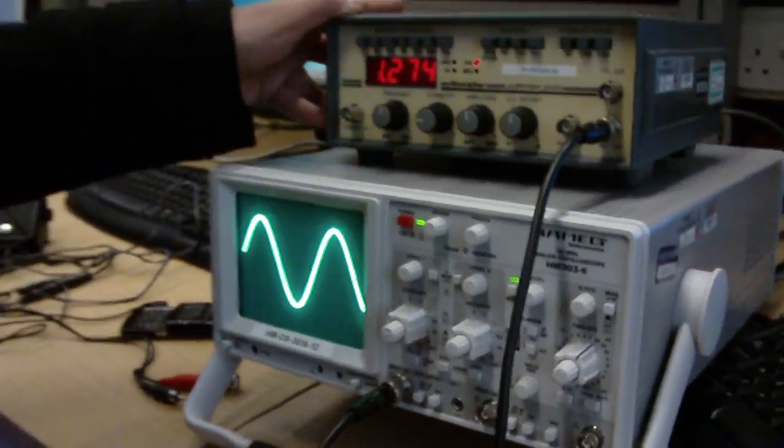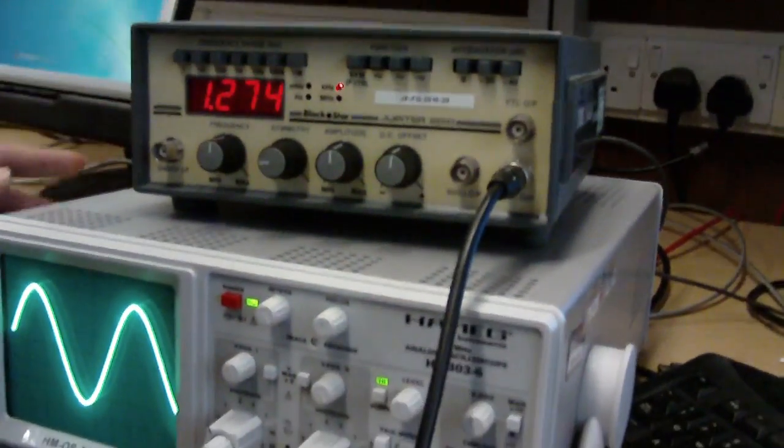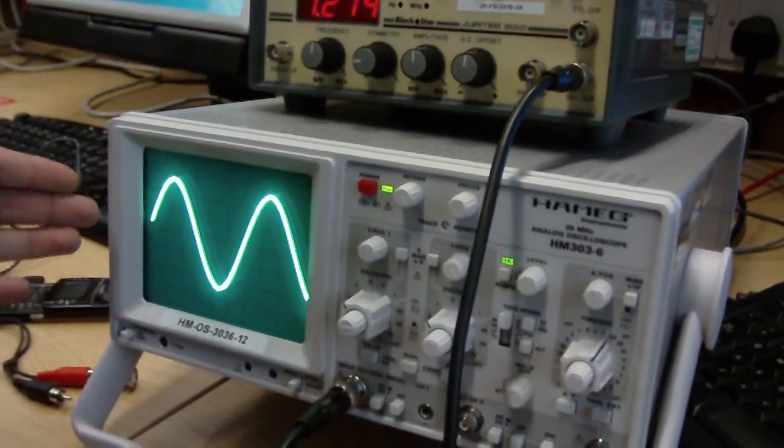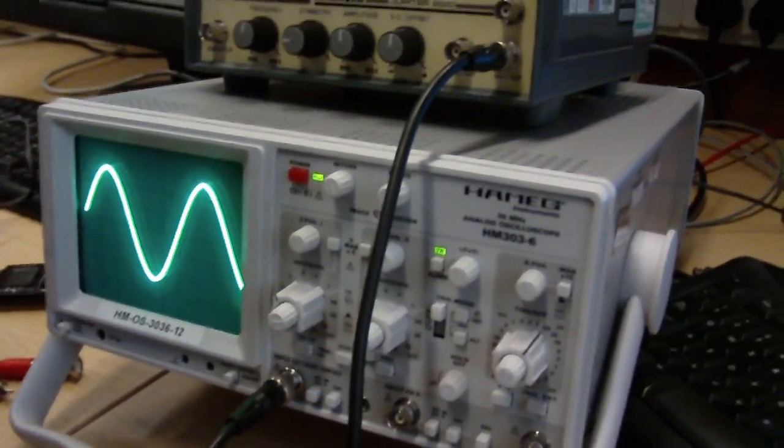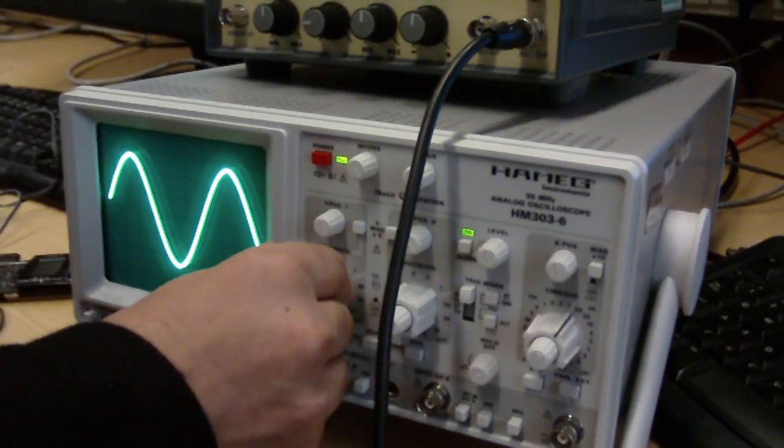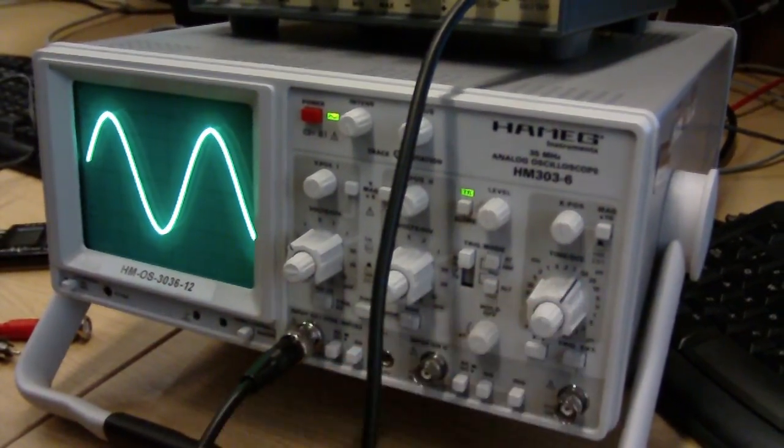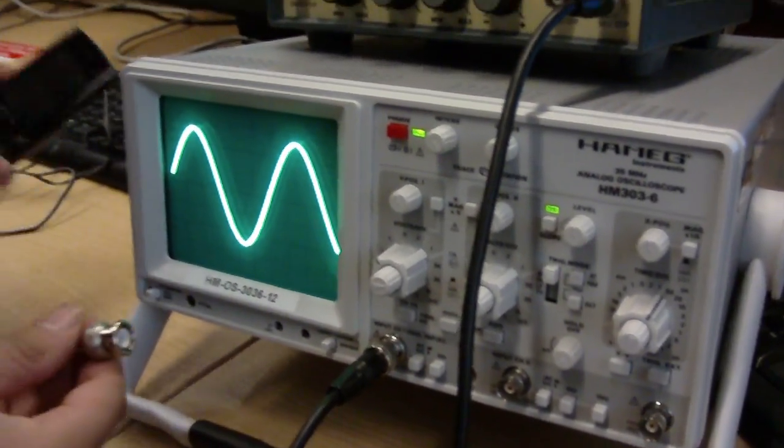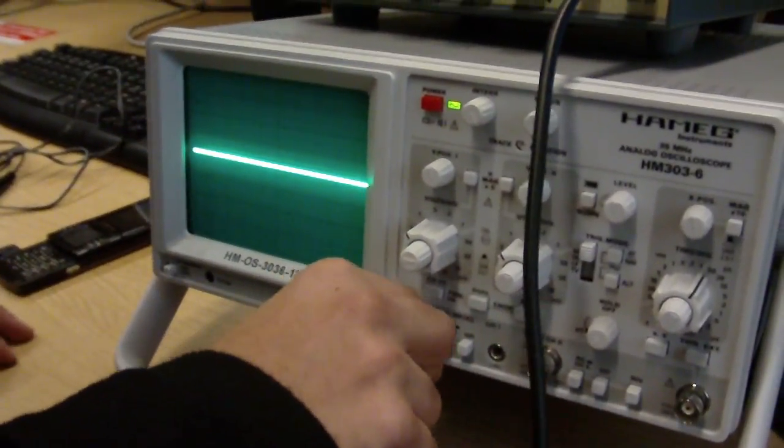So this is an oscilloscope. Basically, this is a frequency generator and it generates sine waves that are displayed on the oscilloscope. But that's all boring, so what I'm going to do is plug my phone into it and we'll see what happens.